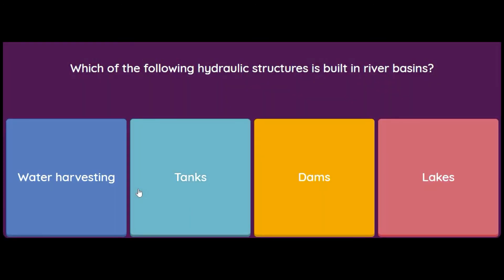This brings us to the last question of Part 2 of the Water Resources MCQ. The last question is: which of the following hydraulic structures is built on river basins — water harvesting tanks, dams, or lakes? The answer is dams — dams are the hydraulic structures built on river basins. Thank you for watching, keep watching and keep sharing, and good luck for your exams!